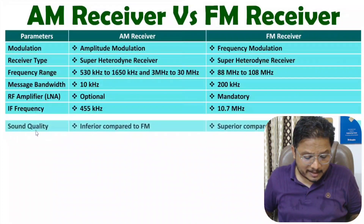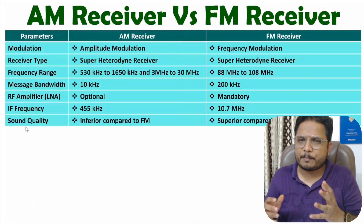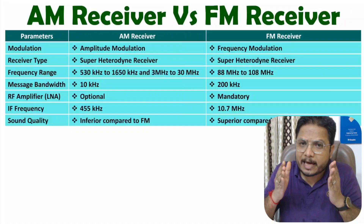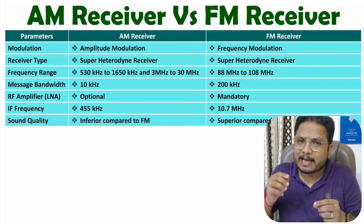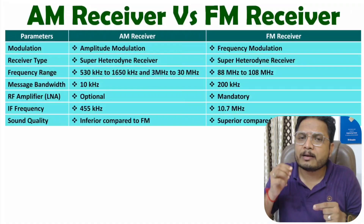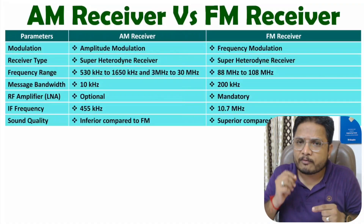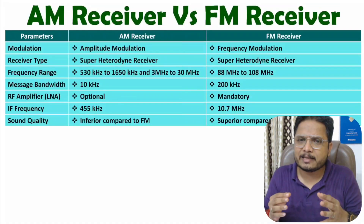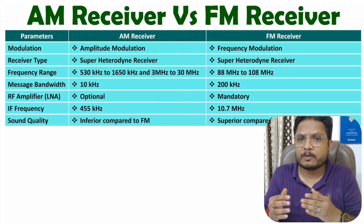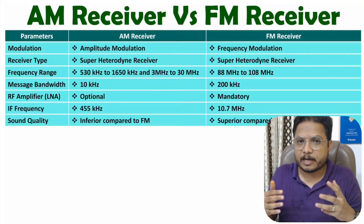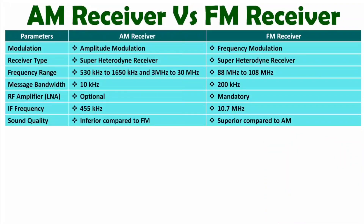The next parameter is sound quality. An AM signal (amplitude modulated signal) always has poor quality because it is prone to noise. With frequency modulation, we have good noise immunity, so FM provides superior quality of sound compared to AM.